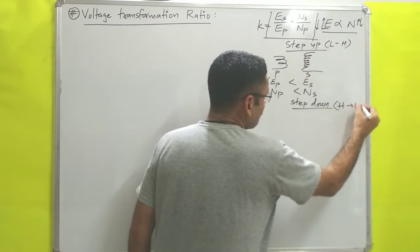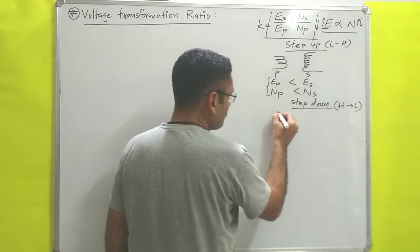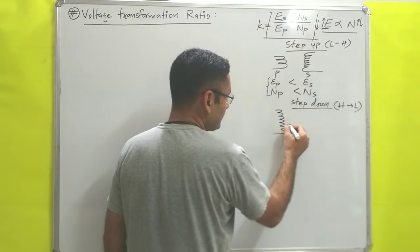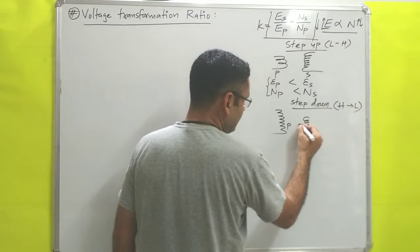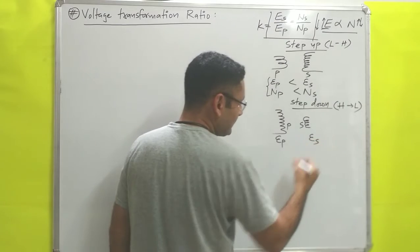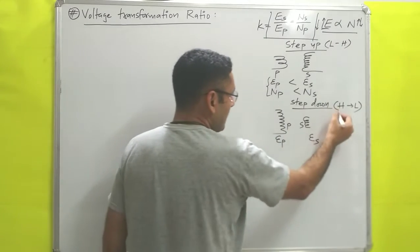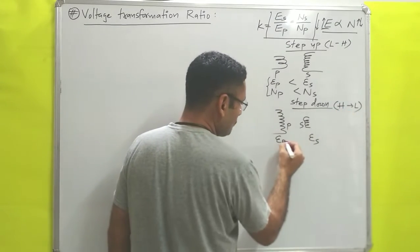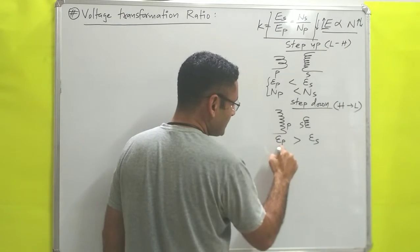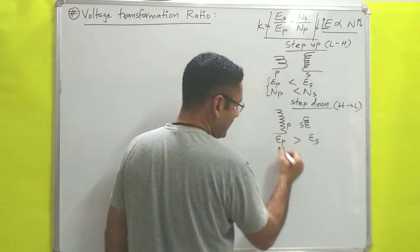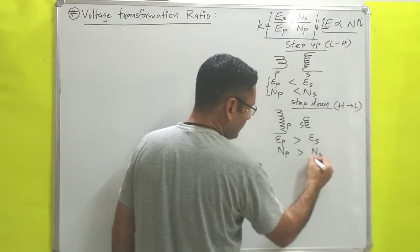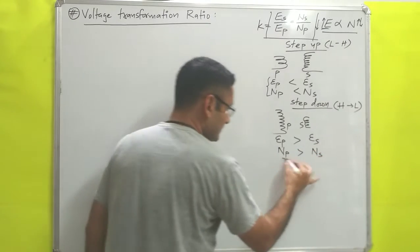We also discussed the step-down transformer, which decreases voltage — from high to low. For the step-down transformer, on the primary side potential Ep is high, and on the secondary side potential Es is low. Since potential is high on the primary side, the number of turns on the primary side is high; and since potential is low on the secondary side, the number of turns on the secondary side is less.